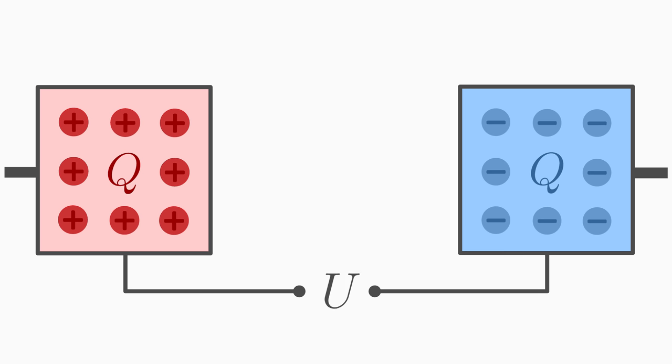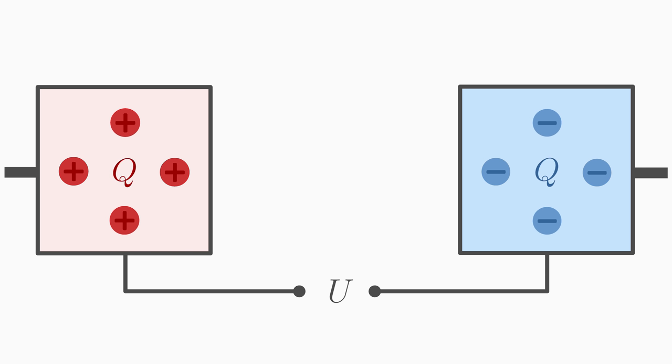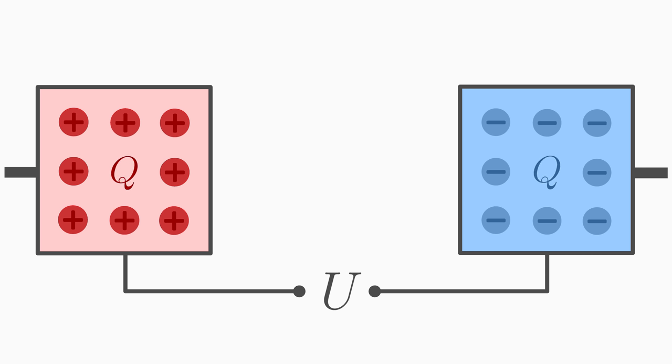The voltage U is smaller when less positive and negative charges are separated. In this case the total charge Q in the boxes is small. The voltage U is large when many positive and negative charges are separated. In this case the total charge Q in the boxes is large.